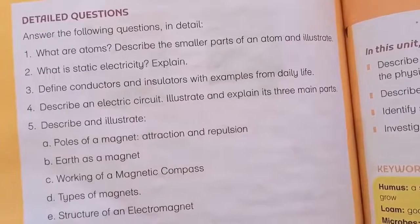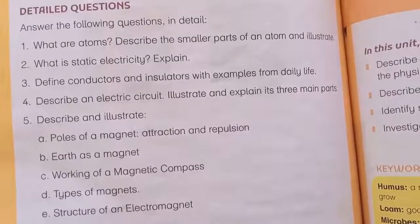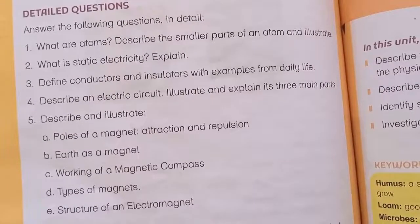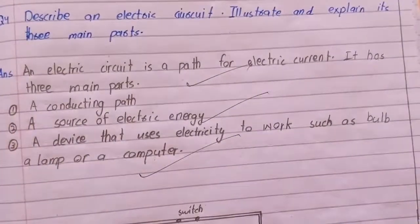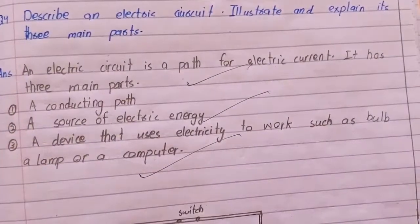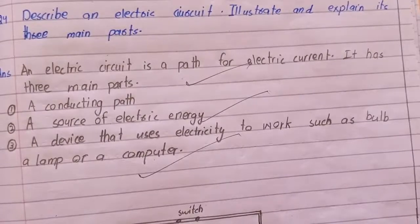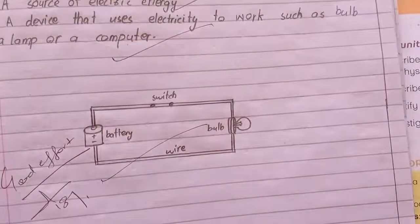The fourth topic is to describe an electric circuit with an example. An electric circuit is a path for electric current. It has three main parts: a conducting wire, a source of electric energy, and a device that uses electricity to work, such as a bulb, a lamp, or a computer.